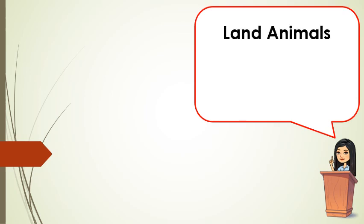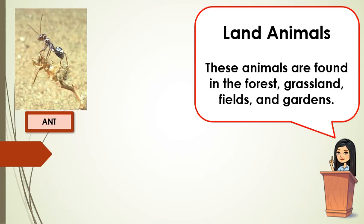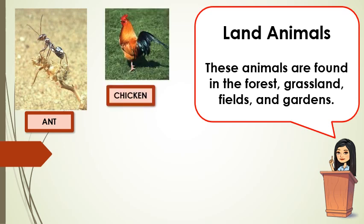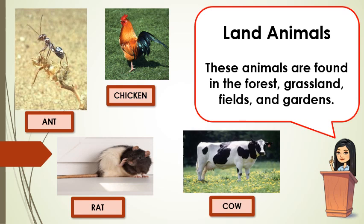Next, we have the land animals. These animals are found in the forest, grassland, fields, and gardens — just like the ant, chicken, rat, and cow. These are called land animals. Now, it's your turn to name some land animals.